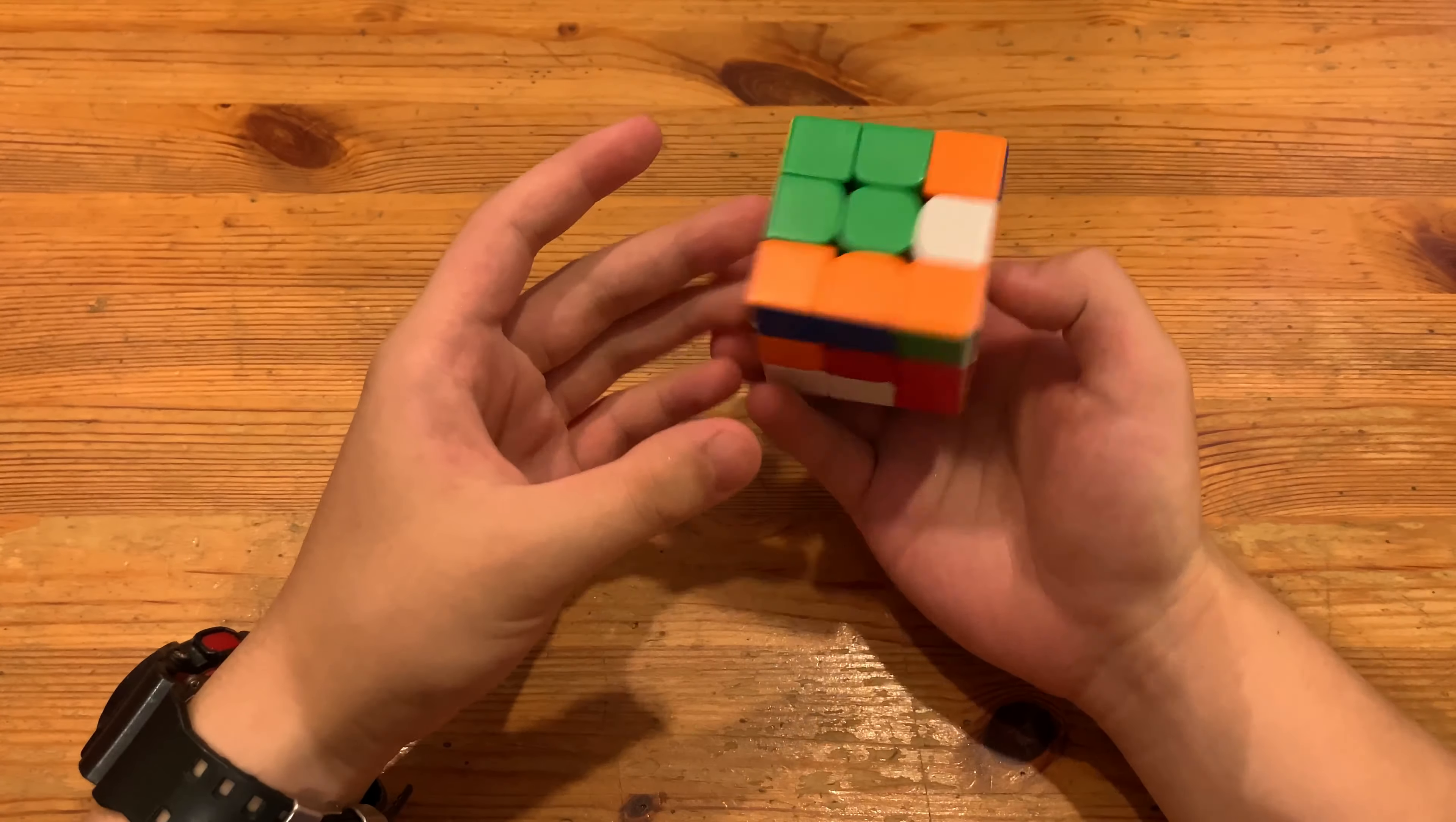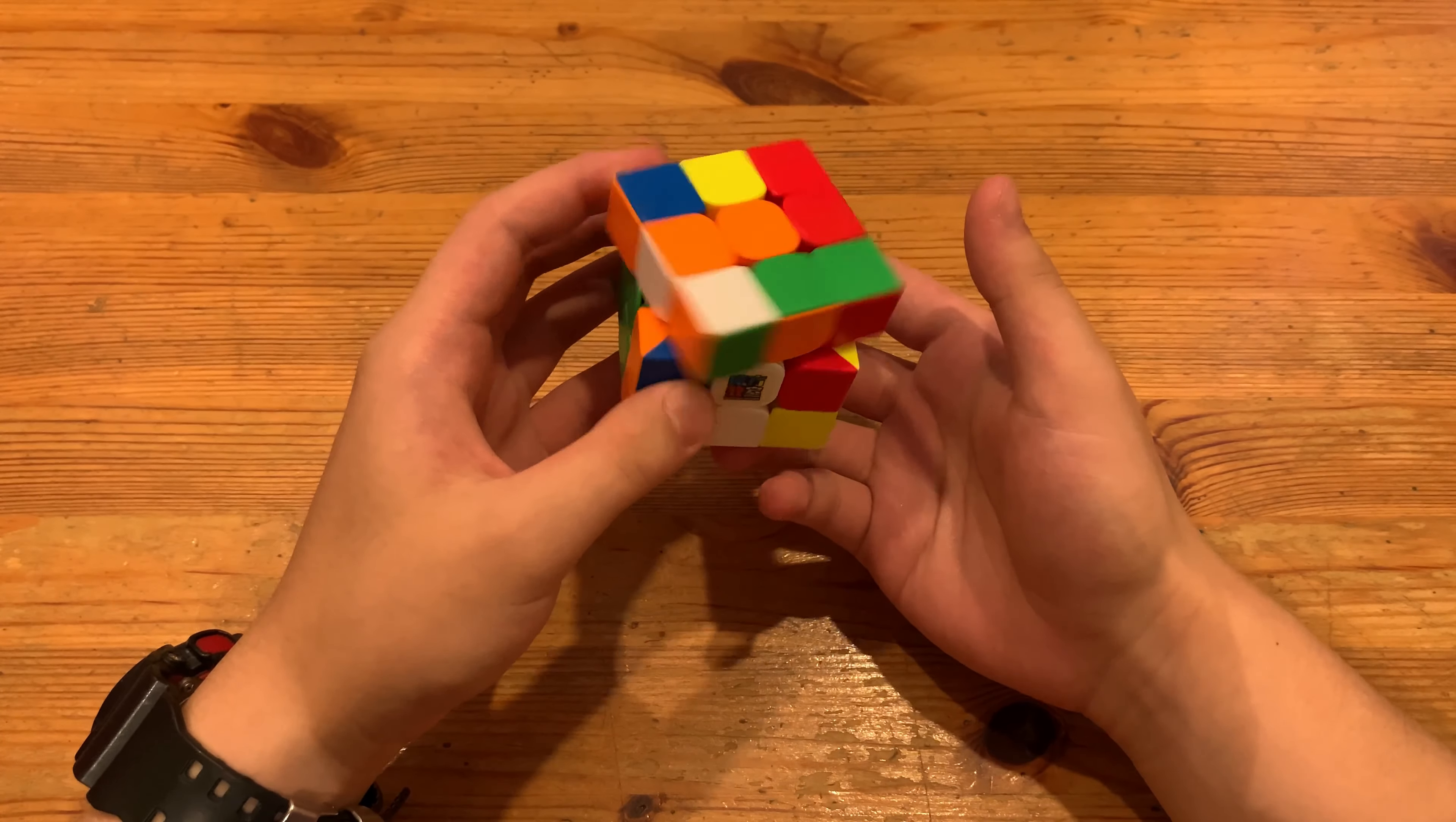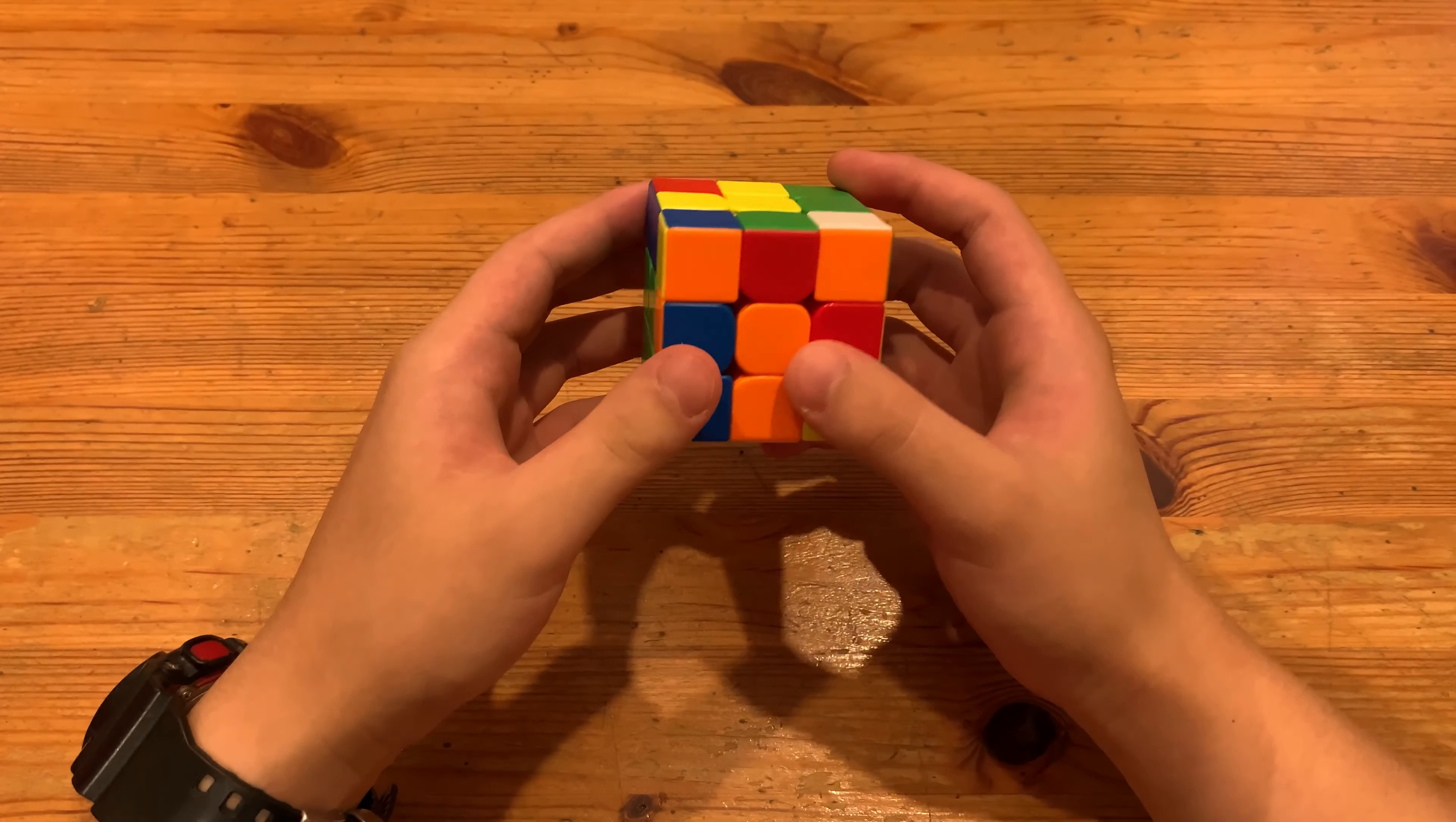F to move it over, L' to move this cross-edge and this cross-edge over here, U', L', and then finally Y' to insert this to make the entire X cross.